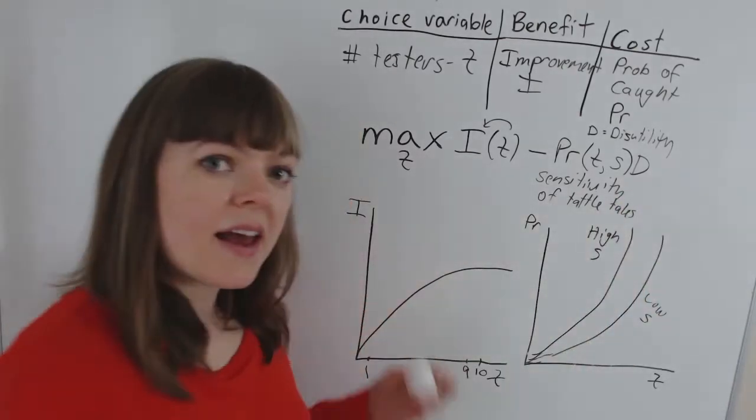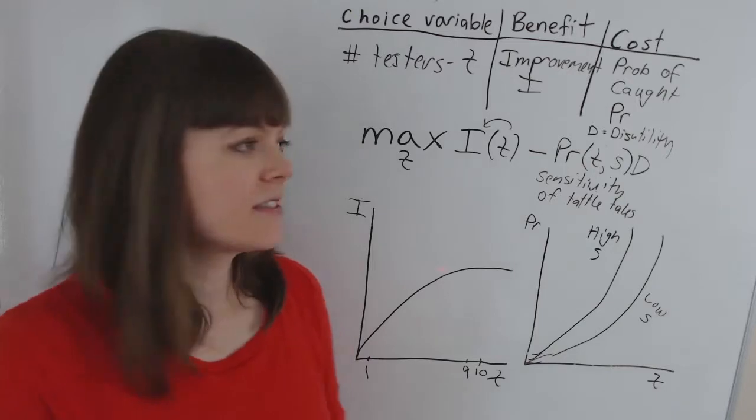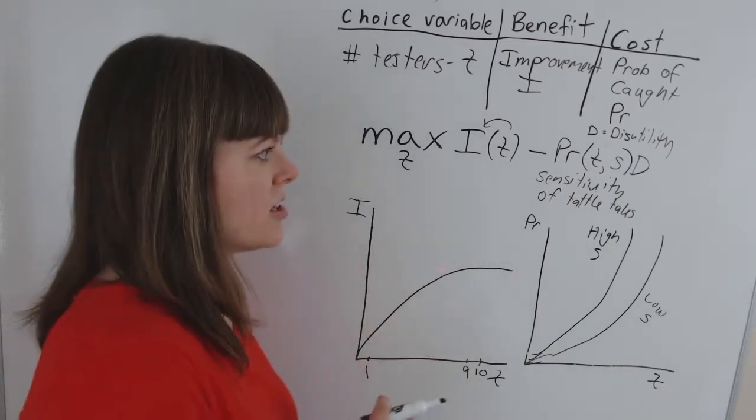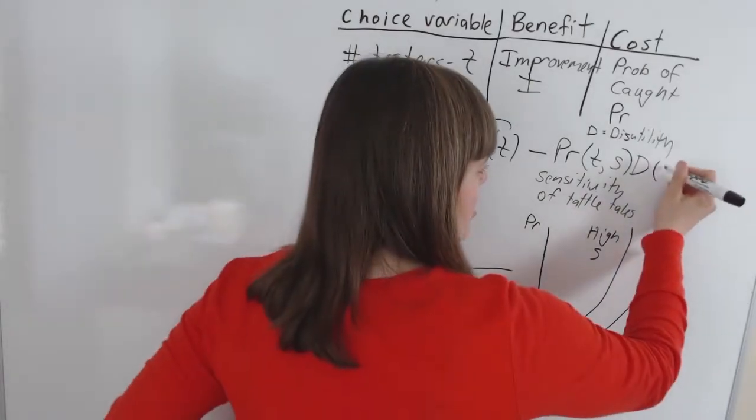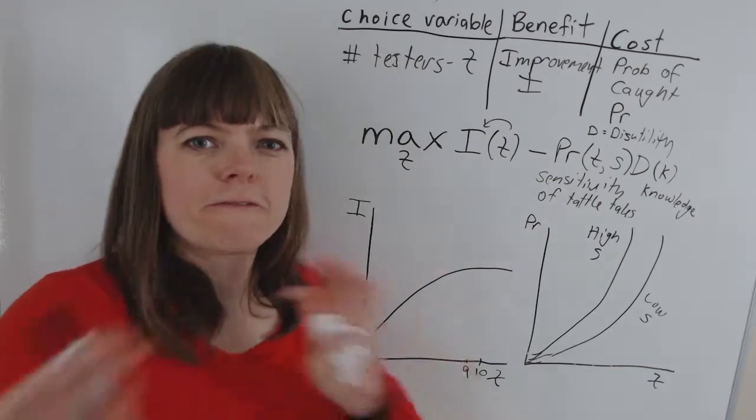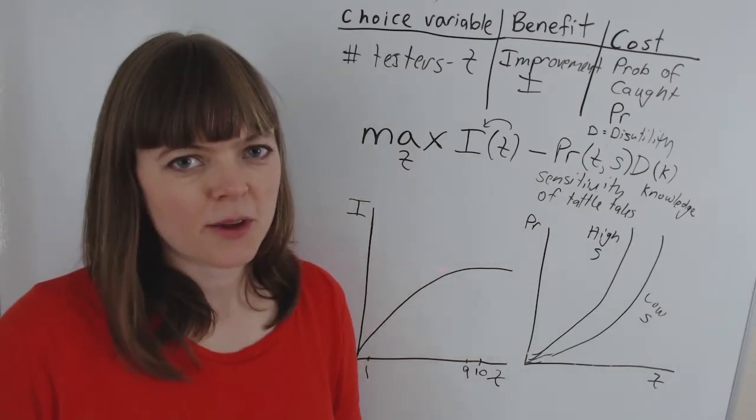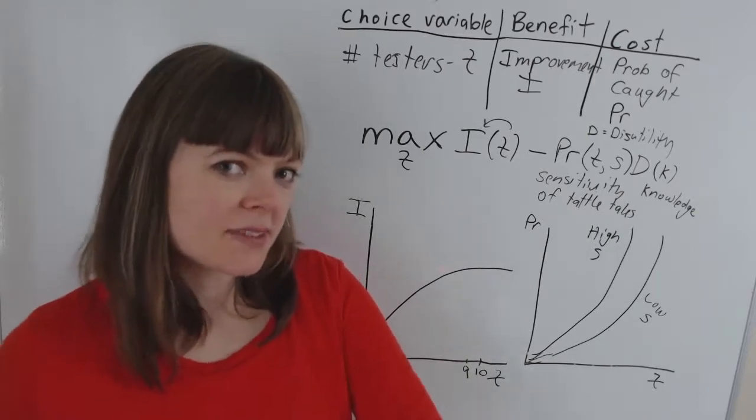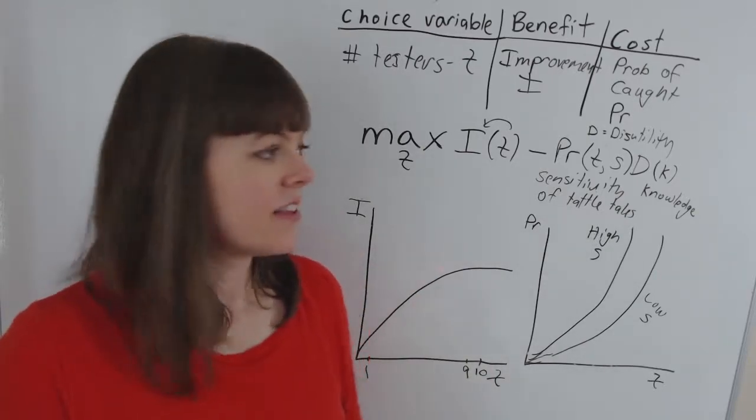Now, we can also add another exogenous variable if we wanted to add the severity of the punishment from Umbridge. And I'm going to call this knowledge. Over the books, Umbridge sort of figures out the population she's working with, and she really figures out the kinds of punishments that will upset and not upset the students.